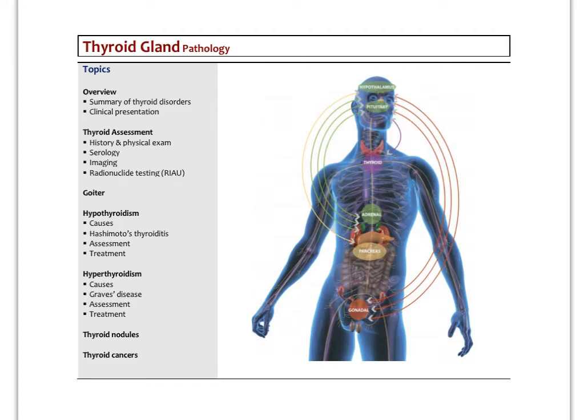In the second video on thyroid gland pathology, I'm going to focus on hypothyroidism primarily. I'll say a few words about goiter and some of the causes of goiter. Be sure to be familiar with the material in the last video where we talked about the assessment tools, in particular the serology tests. Understand what the normal or current guideline reference ranges are for TSH and free T4 in particular.